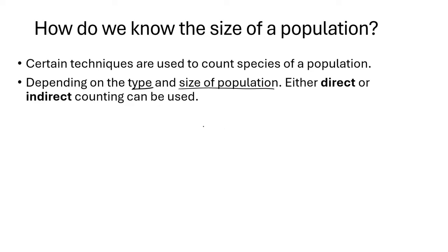We can have two types of techniques to count the population or to count the species. There are direct counting techniques and indirect counting techniques, and they differ depending on the type and the size of the population. You cannot count elephants the same way you would count little insects, so that is why they depend on the size and type of the population.